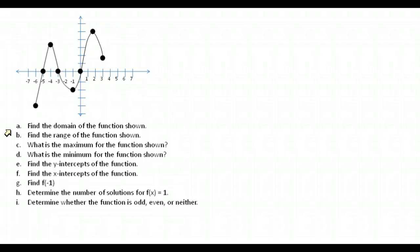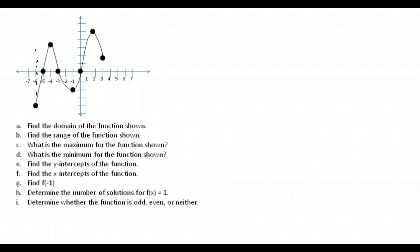First question: find the domain of the function. Remember, domain refers to the possible x-values represented. Notice this graph ends with a point rather than an arrow at each end, so the graph does not go on forever. That means our smallest x-value, the furthest left, is negative six, and our largest x-value, the furthest right, is three.